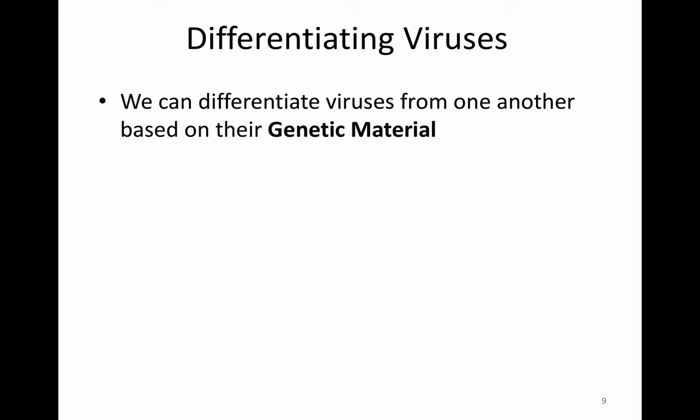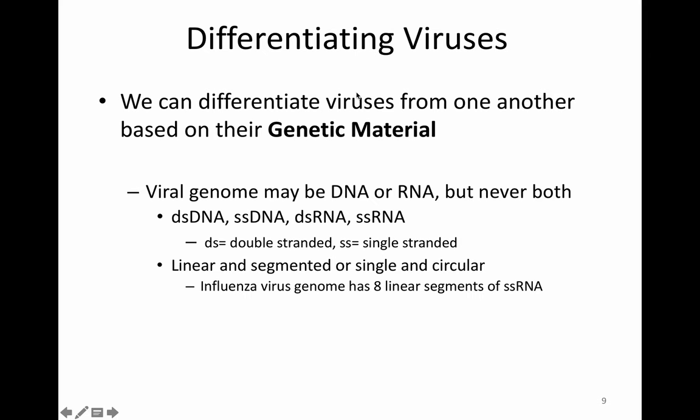One way we differentiate viruses is by whether or not they're naked or enveloped — kind of like gram-positive versus gram-negative in bacteria, though there is no gram-positive or gram-negative for viruses. We can also differentiate viruses from one another based on their genetic material. The viral genome may be DNA or RNA, but they never contain both. The diversity of the genome can be double-stranded DNA, single-stranded DNA, double-stranded RNA, or single-stranded RNA.